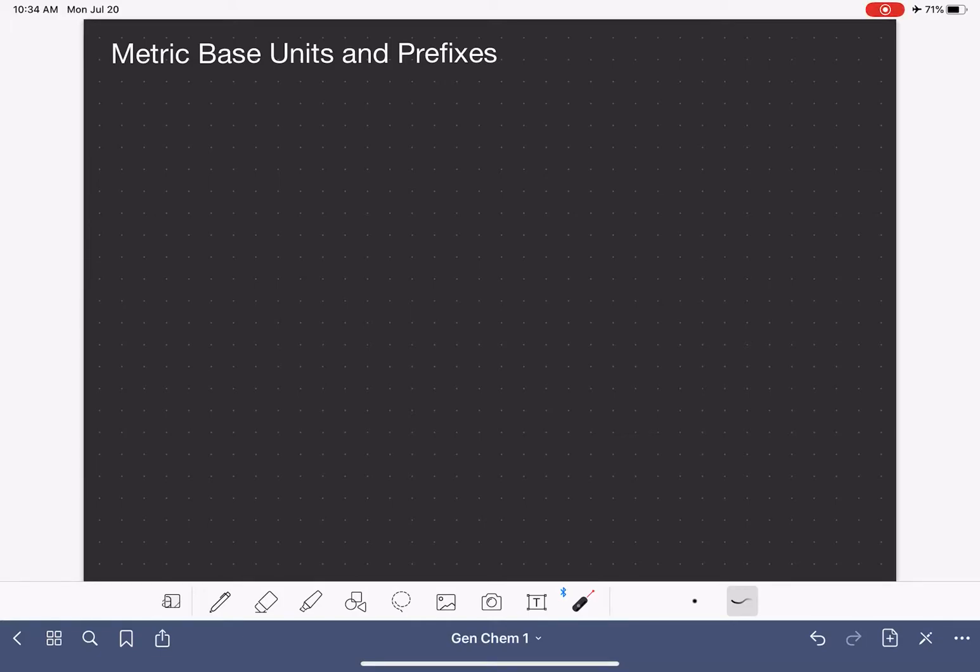Metric units have two components or two parts. They have the base unit and then they also have the prefix. The base unit tells us the type of unit that we're looking at. So for example, the base unit tells us if it's a volume unit or a unit of length or a unit of mass.